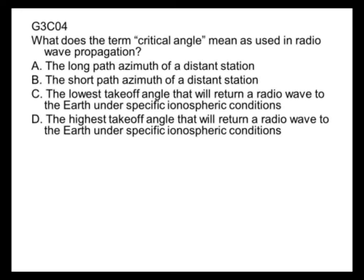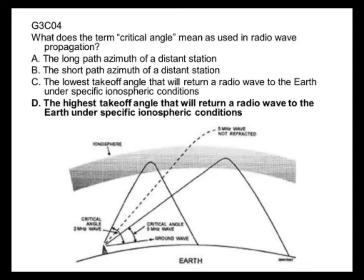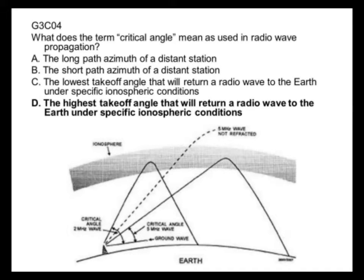What does the term critical angle mean as used in radio wave propagation? The critical angle is the highest takeoff angle that will return a wave to the Earth under specific ionospheric conditions. Here's the critical angle — you can see if a wave takes off at this angle, it will be reflected or refracted back to Earth. But if you take that same signal and launch it at a greater angle, it will keep going out because that angle exceeds the critical angle.